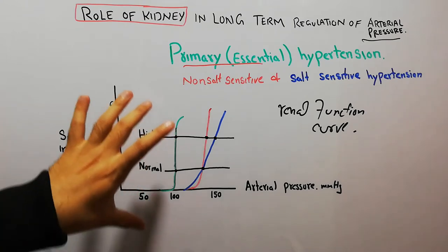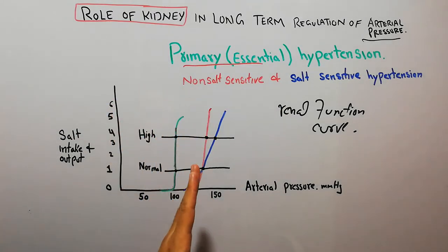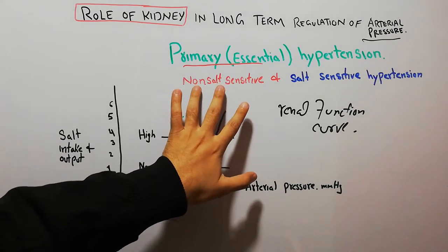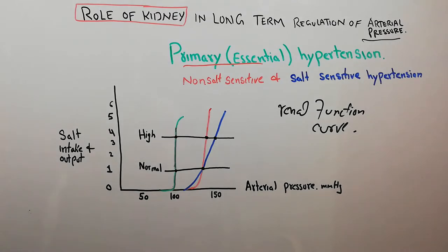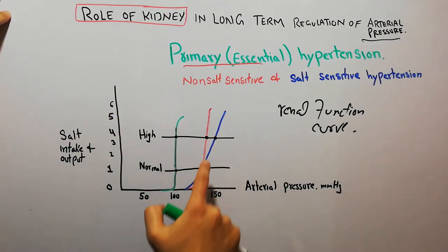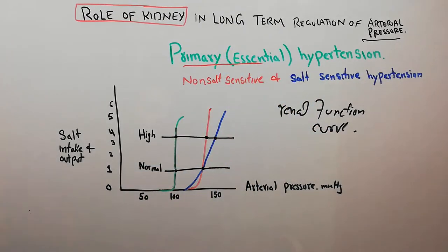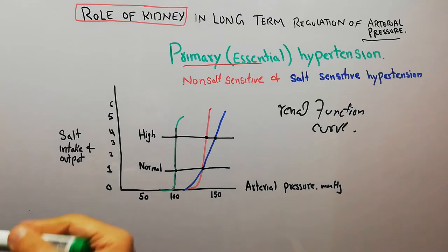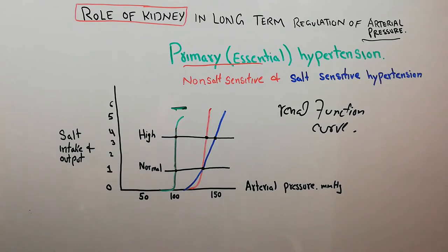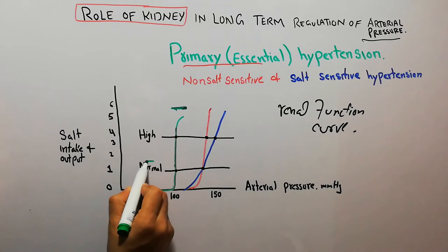In primary or essential hypertension, we look at the curves of both types. The red color shows the non-salt-sensitive hypertension and the blue color shows the salt-sensitive hypertension. Both curves are shifted towards the right. This green line represents the arterial pressure of a normal person, and we can now compare the intake of salt across these curves.